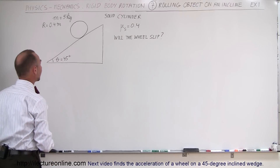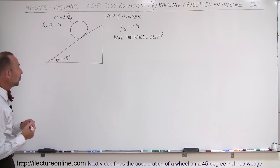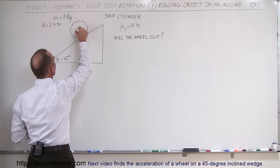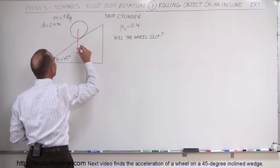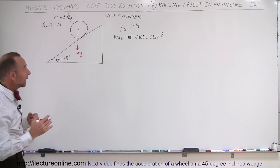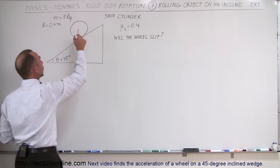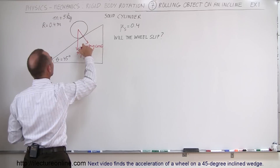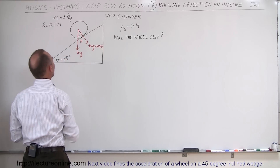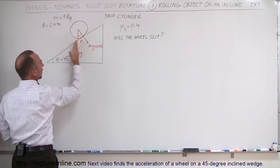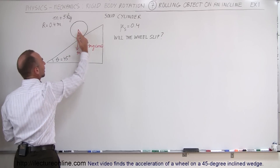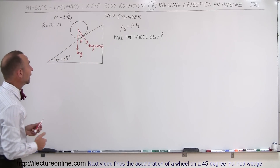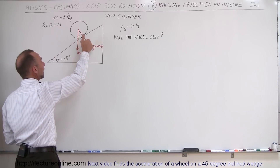First, let's draw all the force vectors acting on the wheel. We have mg coming down, and we can divide that into its perpendicular and parallel components. The perpendicular component is mg cosine theta. We can verify this because this line is perpendicular to the incline surface, and this line is perpendicular to the vertical, so the angle between those two pairs of lines must be equal — both are theta. Since it's the adjacent side to the hypotenuse, that component is mg cosine theta.